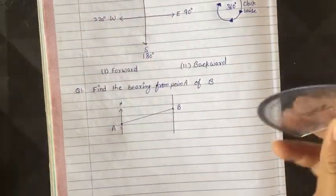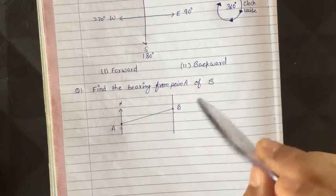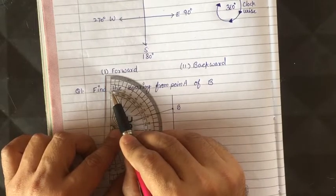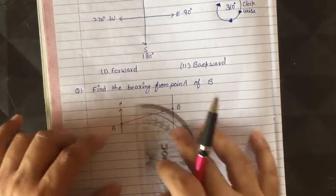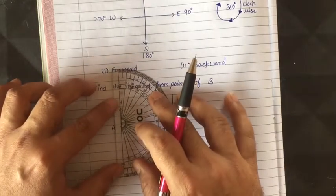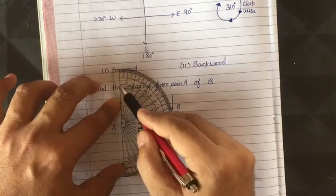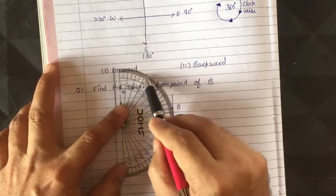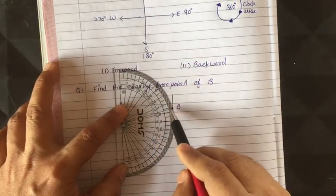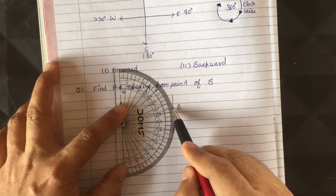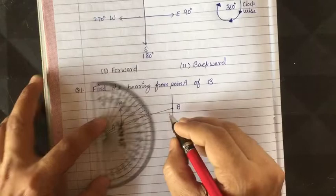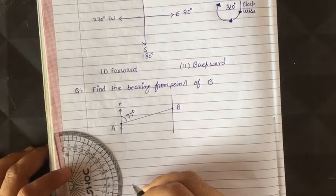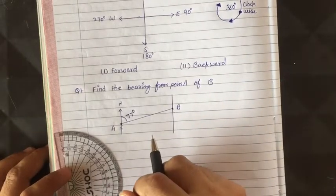You should be very careful while placing your protractor. Always keep the zero of the protractor on the north line. Here the north is at zero degrees. Now, moving clockwise, I can read the angle — it comes to 77 degrees. That is the forward bearing.